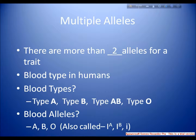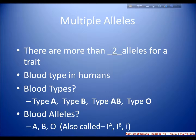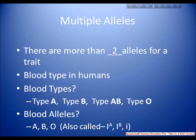Now, coming to multiple alleles. In each of the seven pairs of characters studied by Mendel, there were only two alternative forms for each character. When more than two different forms of a given gene exist in a species, they are referred to as multiple alleles.